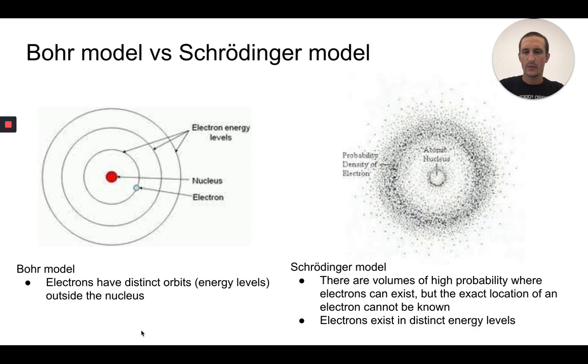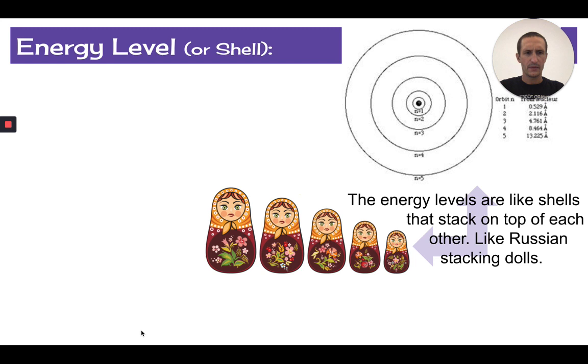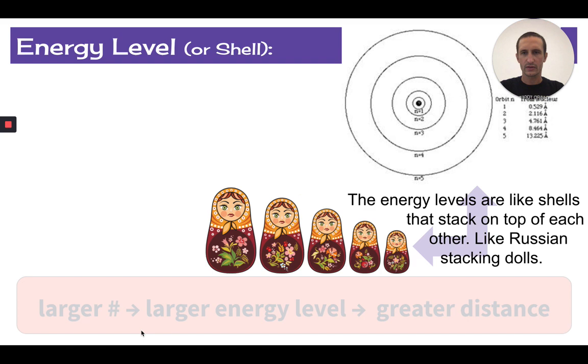I do want to talk a little bit more about these energy levels. Sometimes we also refer to these as shells. So again, thinking about those rings, those layers of electrons. Energy levels are like shells that stack on top of each other. Perhaps you have seen like these Russian nesting dolls or Ukrainian nesting dolls where there is one inside of the other. That is the way these layers of electrons go as well.